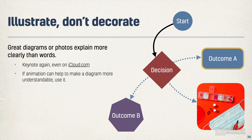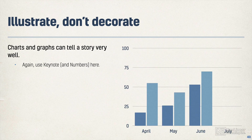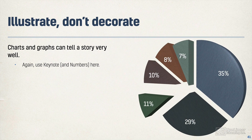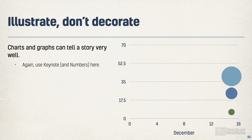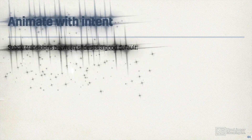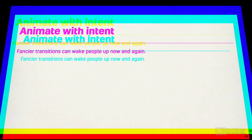Animate with intent — if it helps your message, you can do it. For charts, you can animate them well: appearing, growing, or something else. Keynote can do a terrific job with all kinds of graphs, but make sure it helps you tell the story. Use emphasis to engage the audience, don't just distract them. Subtle transitions are good, and animate with intent to wake people up if you need to.